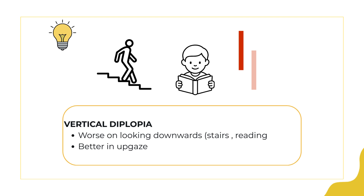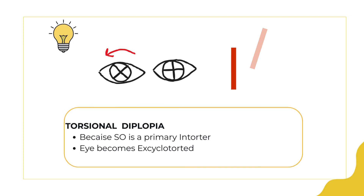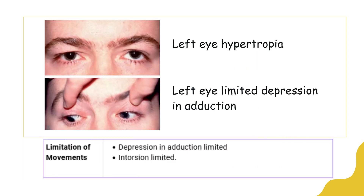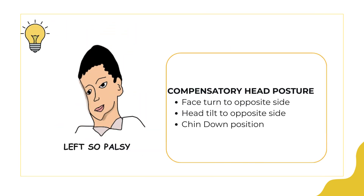Diplopia is better in up gaze when the superior oblique is not acting. Loss of intorsion also occurs since intorsion is the primary action of the superior oblique. Loss of intorsion leads to excyclotorsion of the affected eye, resulting in torsional diplopia where the image appears tilted. On ocular motility testing, there is limitation of depression in adduction and limitation of intorsion, leading to an excyclotorted eye.